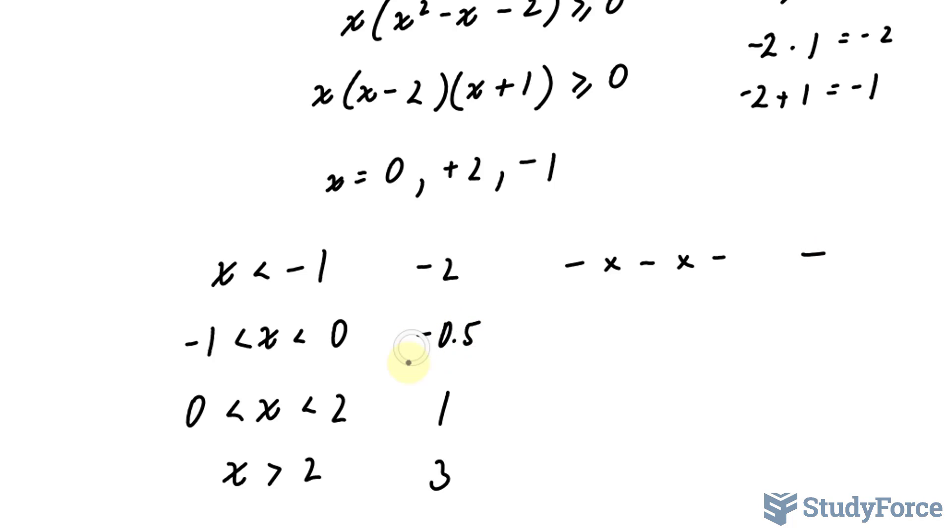We'll do the same thing for this test value. Placing it into here gives us a negative value. Placing it into here gives us another negative value. And placing it into here, negative 0.5 plus 1 gives us a positive value. Negative times negative is positive, times positive, we have a plus.